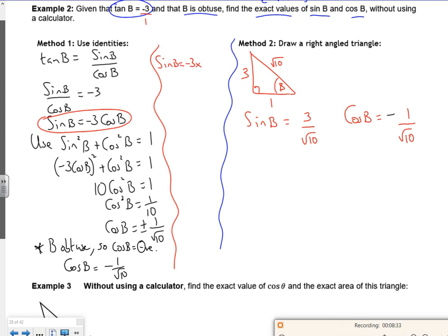So sine B is plus, which is nice, 3 over root 10. That's supposed to say equals there. So I've got that, but once again triangles much nicer. I'm going to stop there. I'll do the third example on the next video.